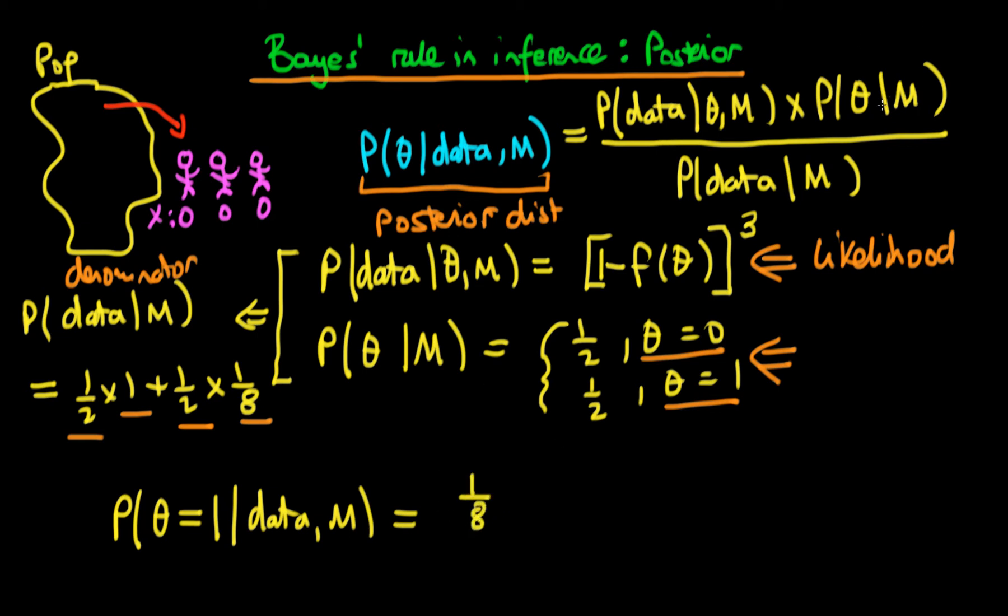and multiply it through by the prior probability that theta is equal to one. And the prior probability we have chosen to be a half, so that's the numerator, and the denominator is just that term which we found over here, which is just a half times one plus one-half times one-eighth.